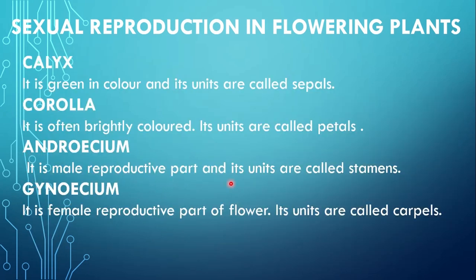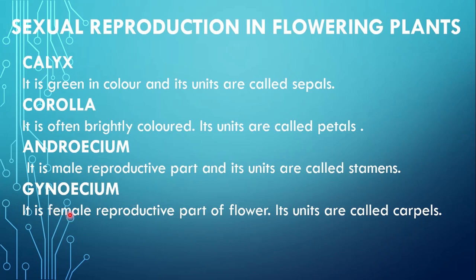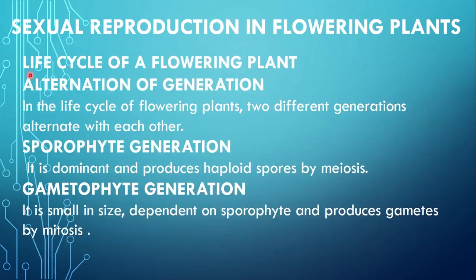Then third one is androecium. It is the male reproductive part and its units are called stamens. These are the stamens which are making the androecium. The fourth one is the gynoecium. It is the female reproductive part of the flower and its units are called carpels. This innermost female reproductive part is called the carpel, which collectively makes the gynoecium.